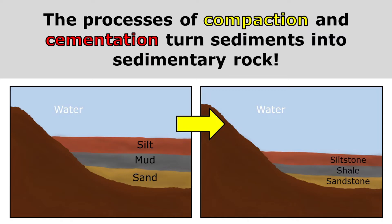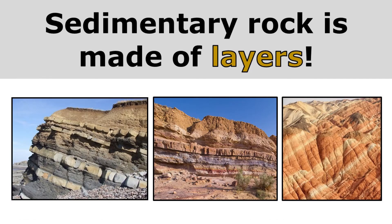You can see how compaction and cementation have turned sand into sandstone, mud into shale, and silt into siltstone. A key characteristic of sedimentary rock is that it is made of layers. So if you can see clear layers of rock, then you're probably looking at a sedimentary rock formation.